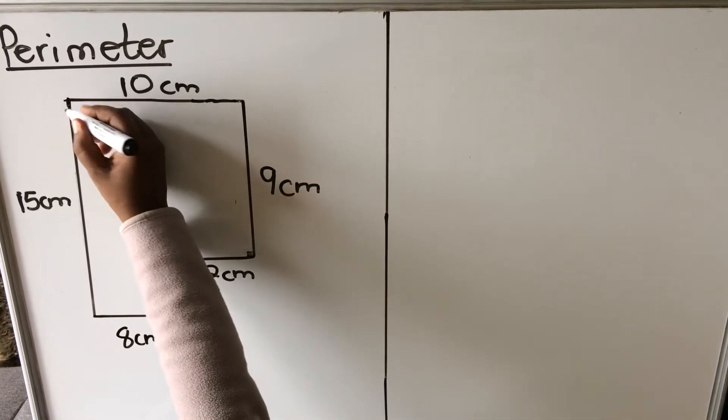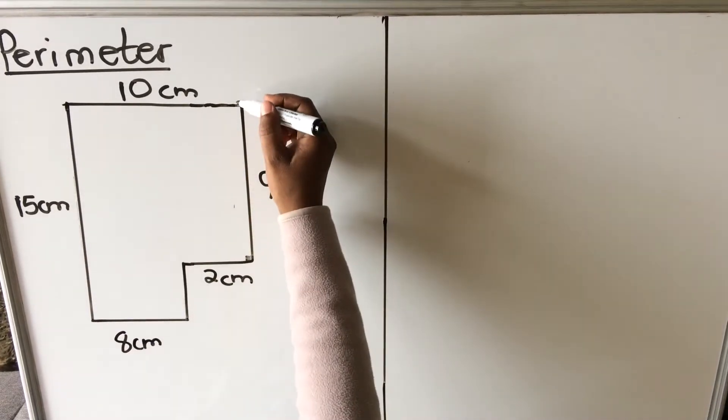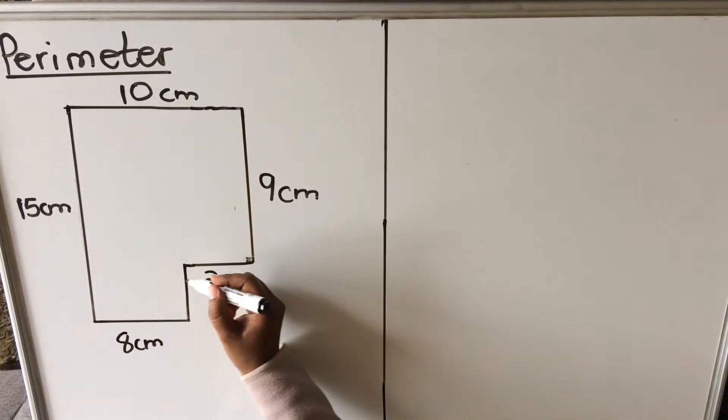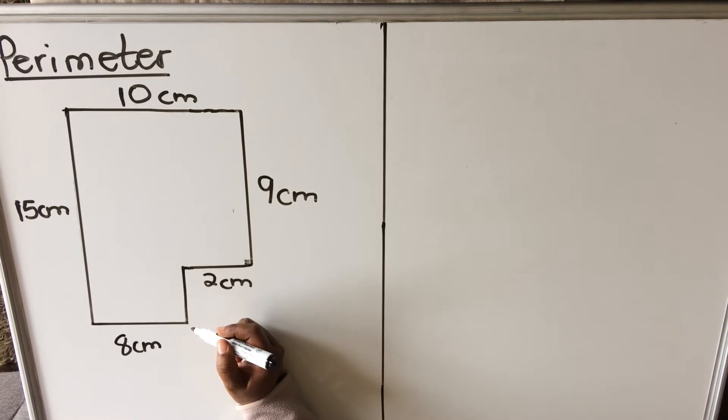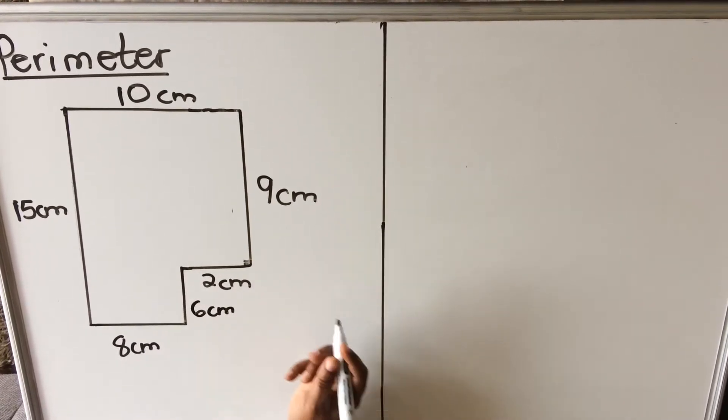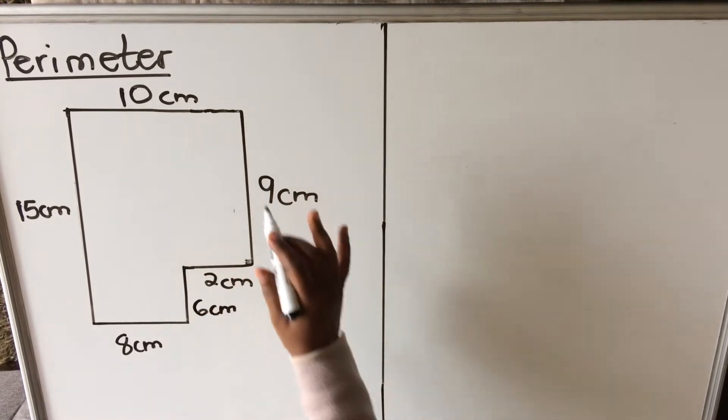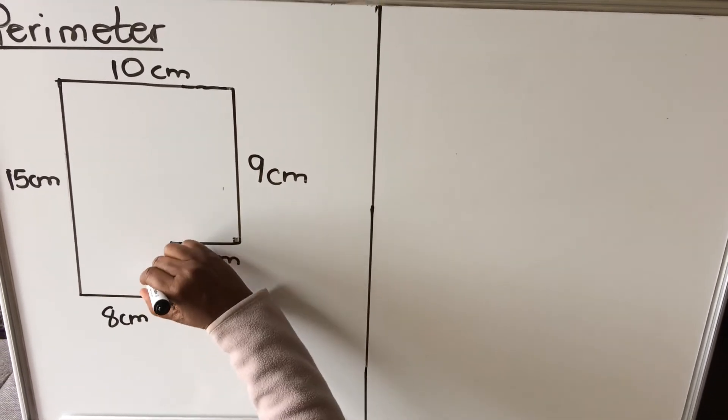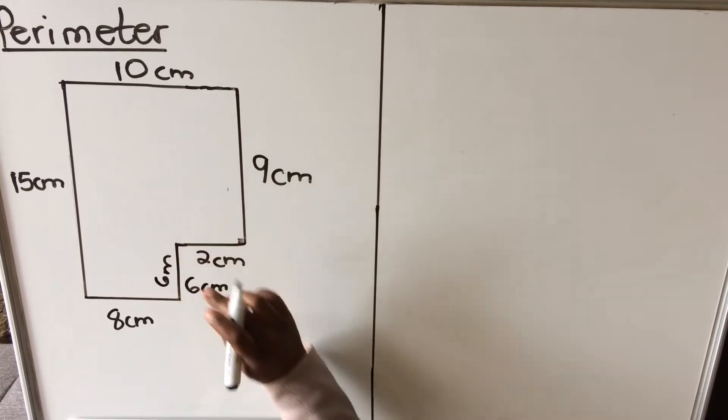This long side is 15 centimeters, then from there to there it's 9, so from here to here it's 6 centimeters. Now you have all the values for all the distance around. Let me put the 6 here so that it doesn't confuse with the 2.